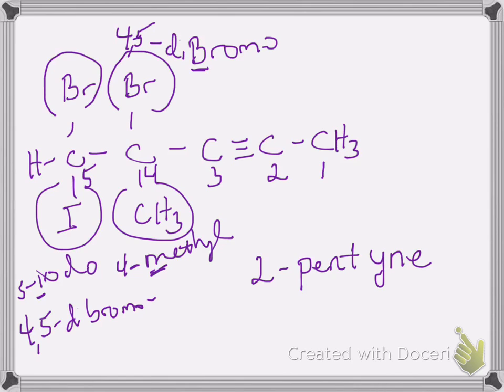So the full name is 4,5-dibromo-5-iodo-4-methyl-2-pentyne. The substituents are in alphabetical order: bromo, iodo, then methyl. 'Di' is added to bromo because there are two of them. That concludes this video on naming alkanes, alkenes, and alkynes.